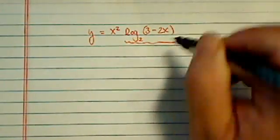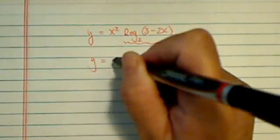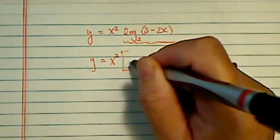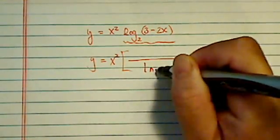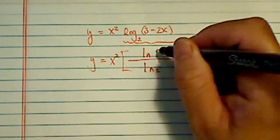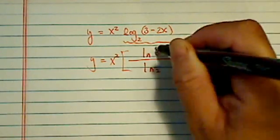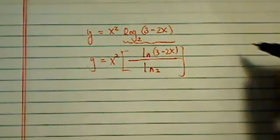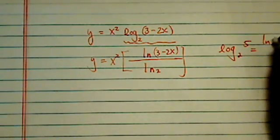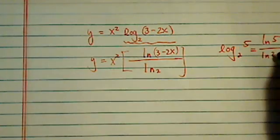First thing we need to do is change log base 2 because the derivative of log base 2 is difficult to find. Log base 2 can be changed into natural log of 3 minus 2x on top and natural log of base 2. So basically, log base 2, let's say it's 5, is equal to natural log of 5 over natural log of 2.